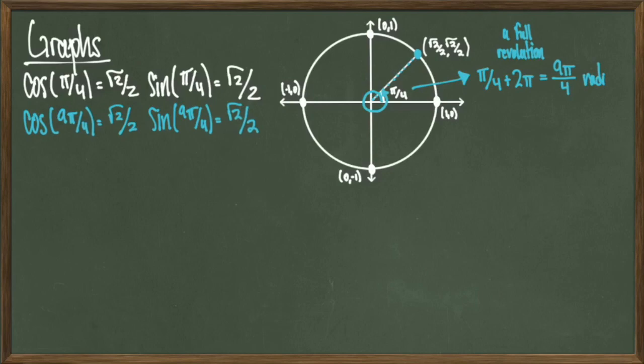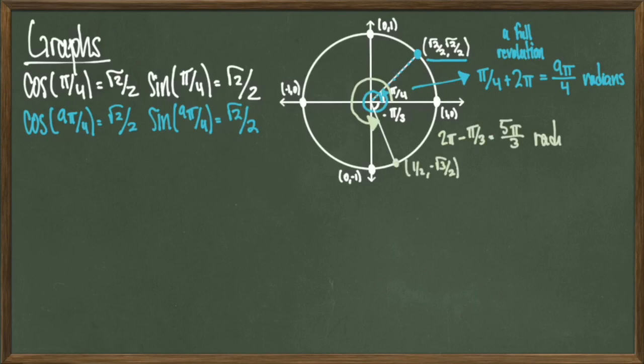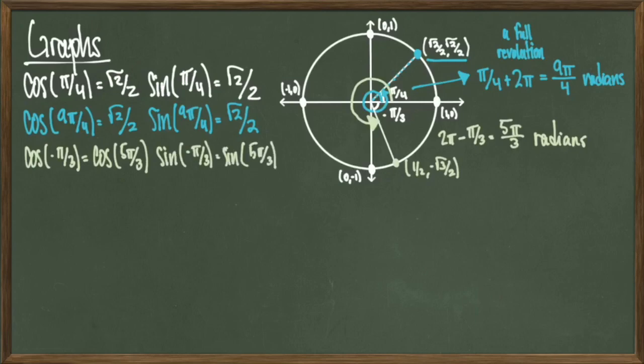The takeaway is that if I have an angle that keeps traveling around the unit circle, my trig functions are going to start returning repeated values. Now suppose I'm looking at a negative angle — consider negative pi over 3. I can realize this as a positive angle by subtracting pi over 3 from 2 pi to get 5 pi over 3 radians. Visually these give the exact same location on the unit circle, and cosine and sine of negative pi over 3 and 5 pi over 3 give the exact same values.